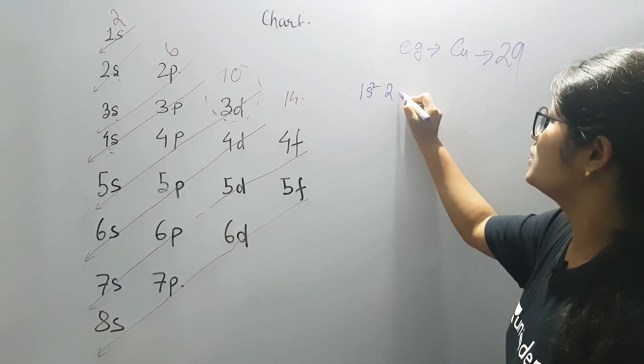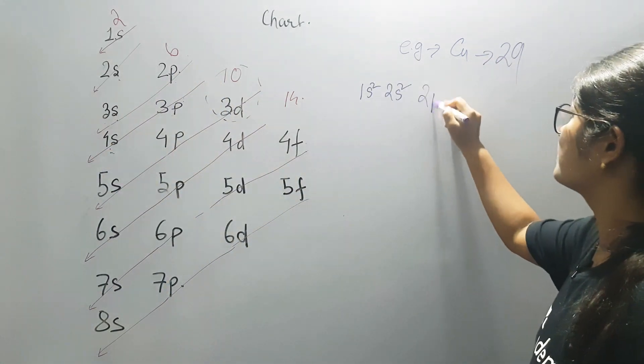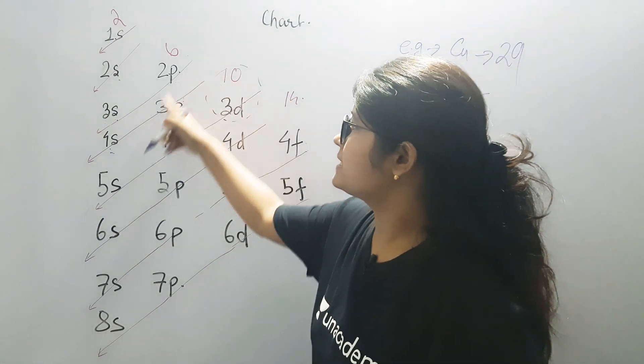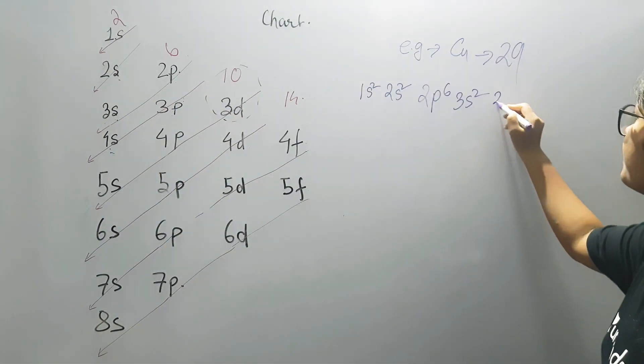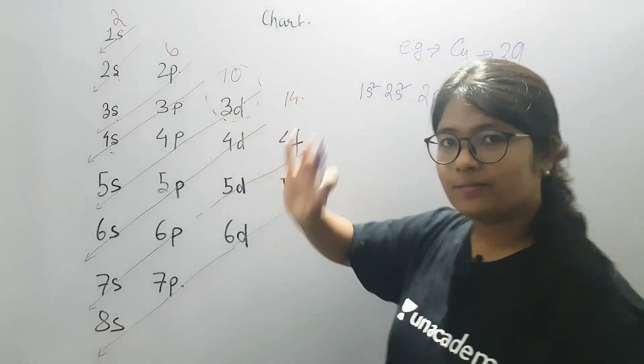What will happen: 1s2, 2s2, 2p6, 3s2, 3p6, 4s2, 3d10. Wait.